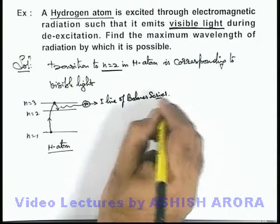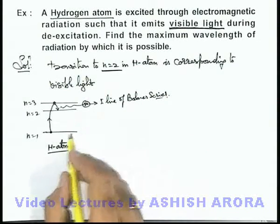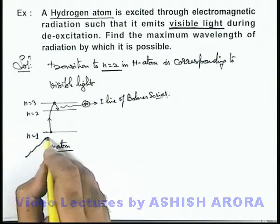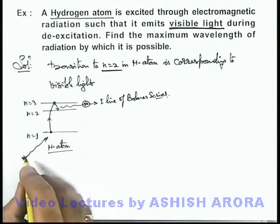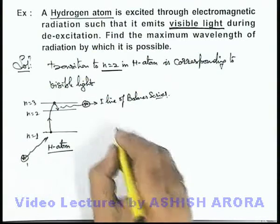Which exist in visible radiation range. Now in this situation, for excitation from 1 to 3 we need to supply an electromagnetic photon, and say if this photon 1, then we can directly write.